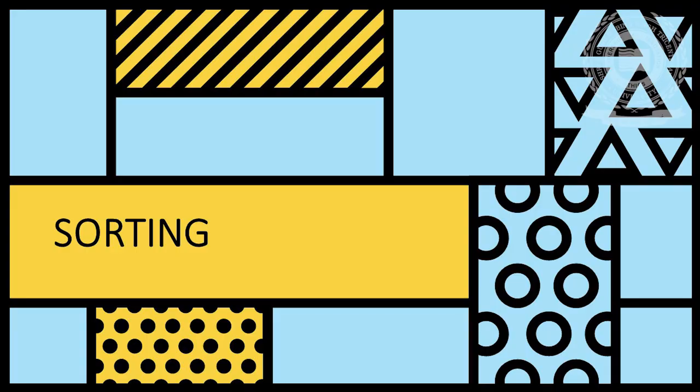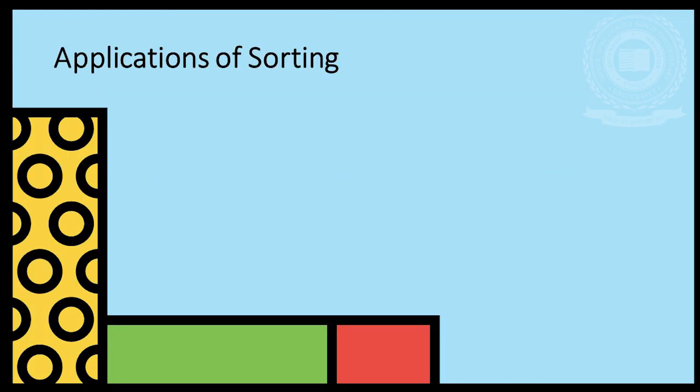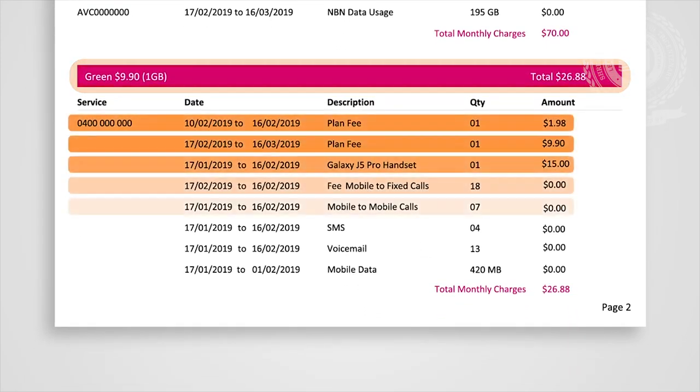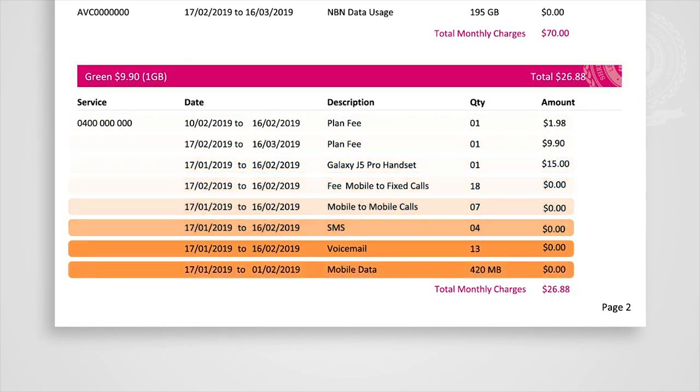Before we understand various ways of sorting in data structure, we will go through real-world applications of sorting. First, phone book. In this video, we clearly see the specific charges applied on every call, sorted with respect to date.